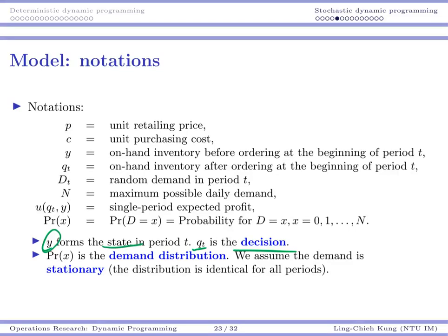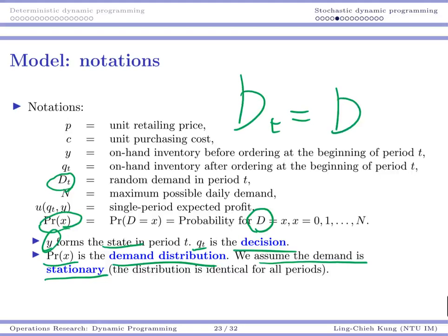Pr is the demand distribution. Let's assume the demand is stationary, which means your probability does not depend on periods. Sometimes this assumption is not correct. For example, when you are going to close your store, when you are already in period 1 or period 2, people know that your store is going to close so they may have a higher demand. That's possible. But here let's assume capital D is just Dt for all t and t prime, which means they are all identically distributed.